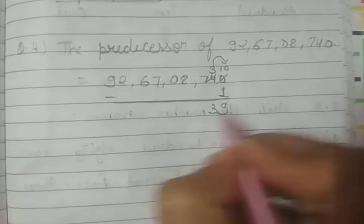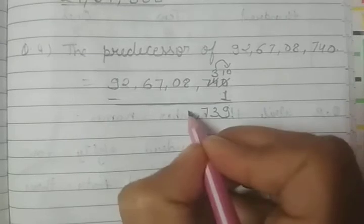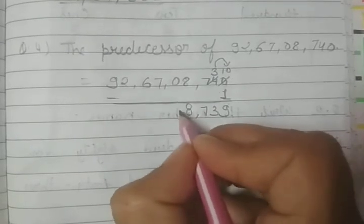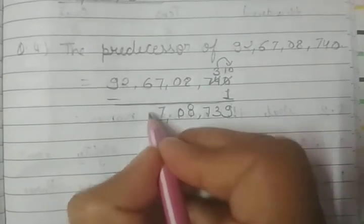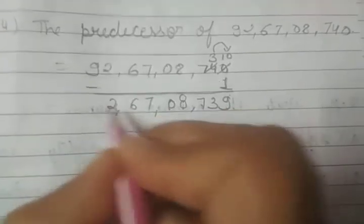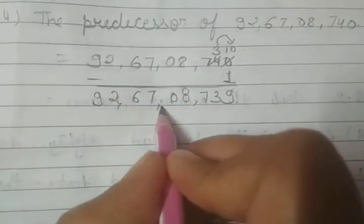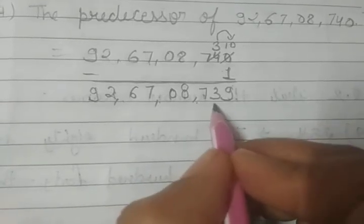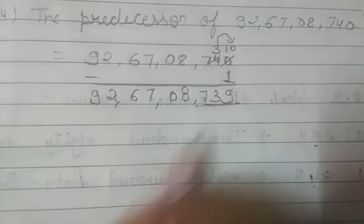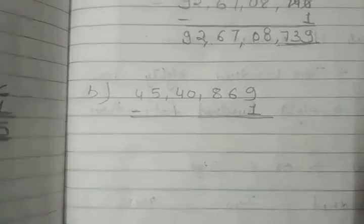Continuing the calculation: 9, 3, 7, 8, 0, 7, 6, 2, 9. So 92,67,08,739 is our answer.